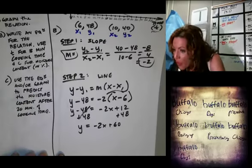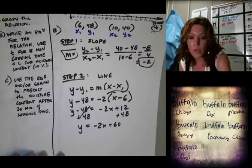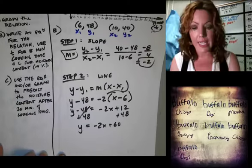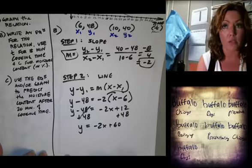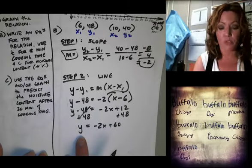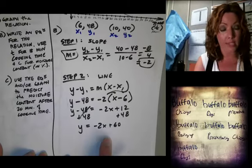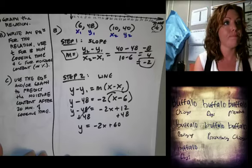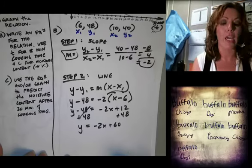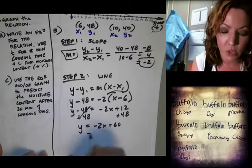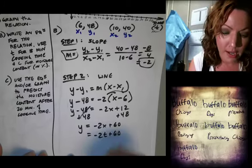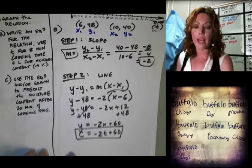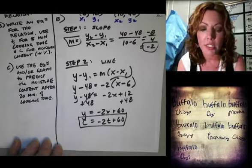The problem specifically said to use c and t. So which goes in for which? t is x and c is y — so our equation becomes c equals negative 2t plus 60. That's our equation.